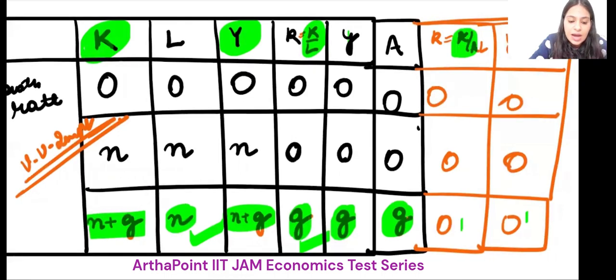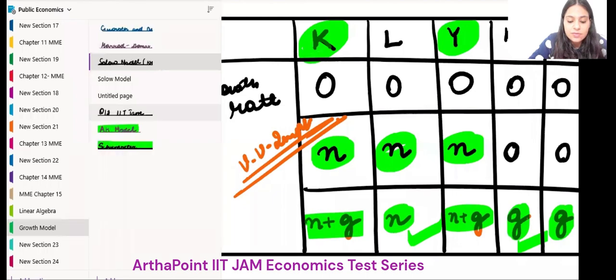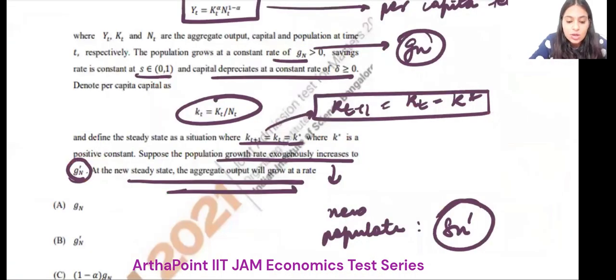We know that output and capital grow at the same rate as the rate of labor. Labor is now growing at a rate of Gn dash. That's the rate at which labor is growing.